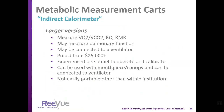Indirect calorimetry measurements are made using an indirect calorimeter or metabolic measurement cart. These larger versions measure oxygen consumption, CO2 production, respiratory quotient, and resting metabolic rate, and may also measure pulmonary function. Many are connected to or are a component of a ventilator. They are expensive, require experienced personnel to operate and calibrate, and are generally not very portable.